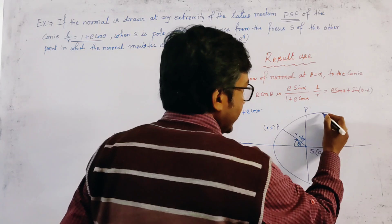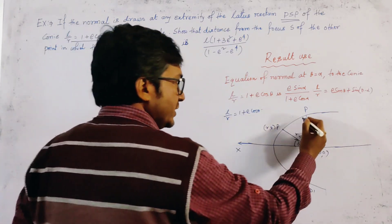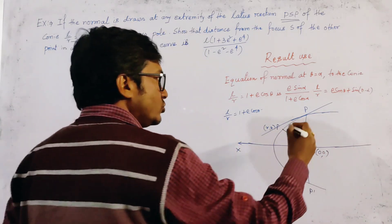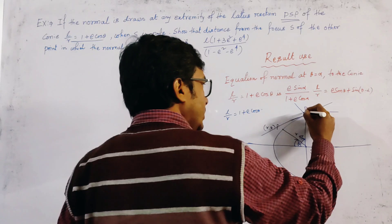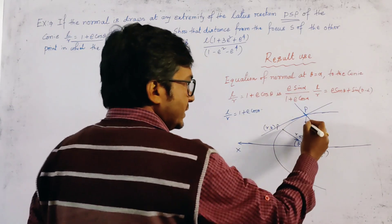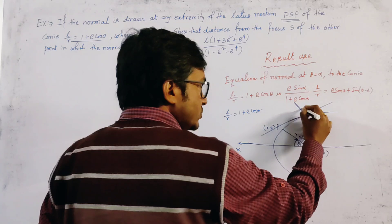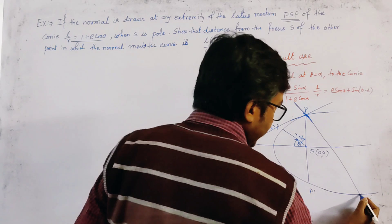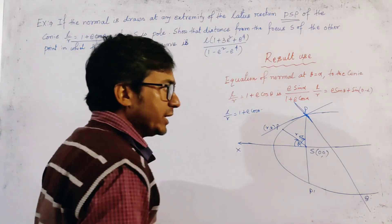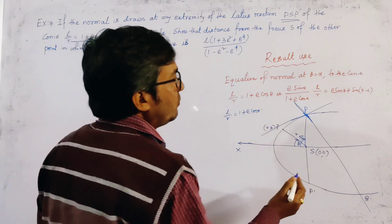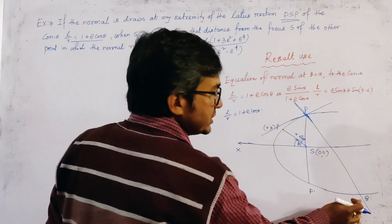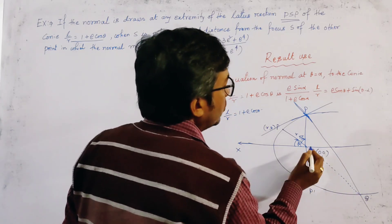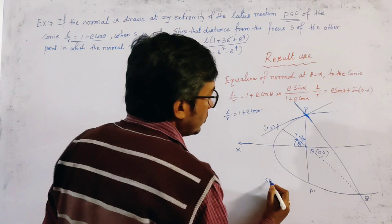We draw a tangent first at point P. If we draw a tangent at point P, that is one extremity of the latus rectum, then we draw a normal. This is the normal at point P, and it is clear that this normal through P meets the conic again at another point, let it be Q. So we have to find the distance of Q from the focus S, that is SQ.